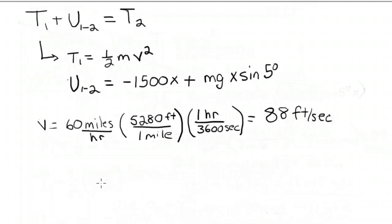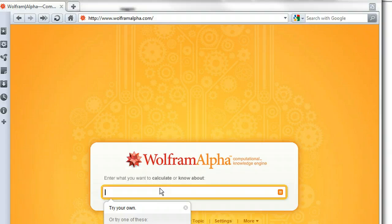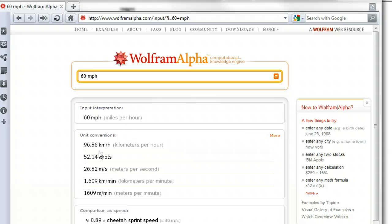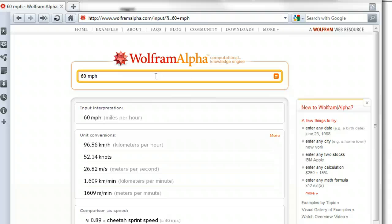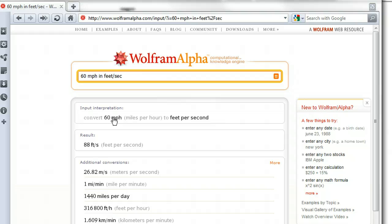I want to show you another tool to use to do this conversion. This is the website Wolfram Alpha. It's, as they say, a knowledge engine, similar to a search engine, but it calculates knowledge. So let's put in 60 miles per hour and see what that equals. It'll do all sorts of conversions: 96.56 kilometers per hour, 52 knots, 26 meters per second, kilometers per minute. None of that helps us. We want feet per second. So we get a little more specific here in feet per second, and so it's converting 60 miles per hour to feet per second, and there's our result, 88 feet per second.